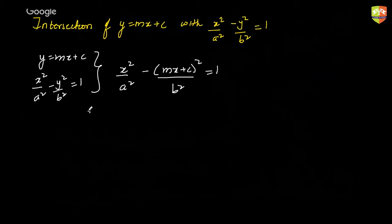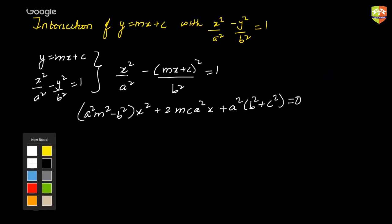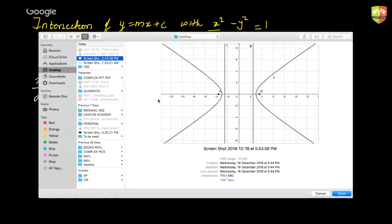If you simplify this, you are going to get a quadratic equation in x. And just by deciding the nature of the roots of this quadratic equation, you can actually make out whether the line is cutting, touching, or not even touching the given hyperbola.